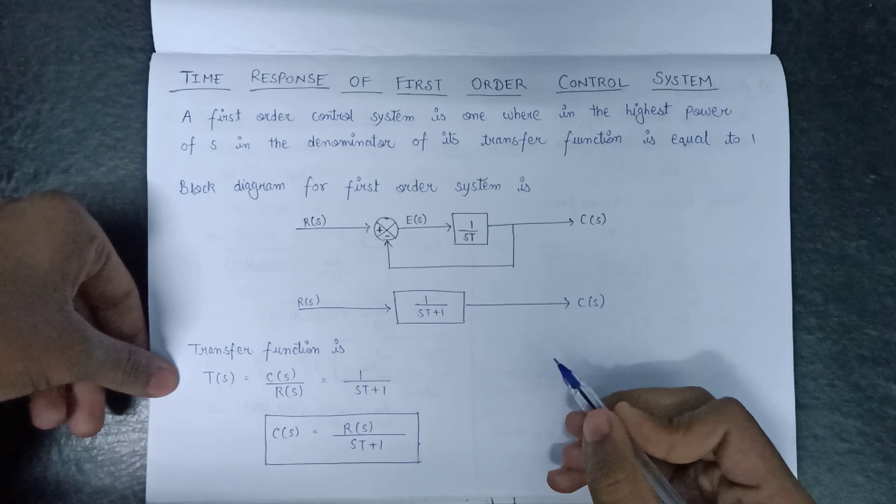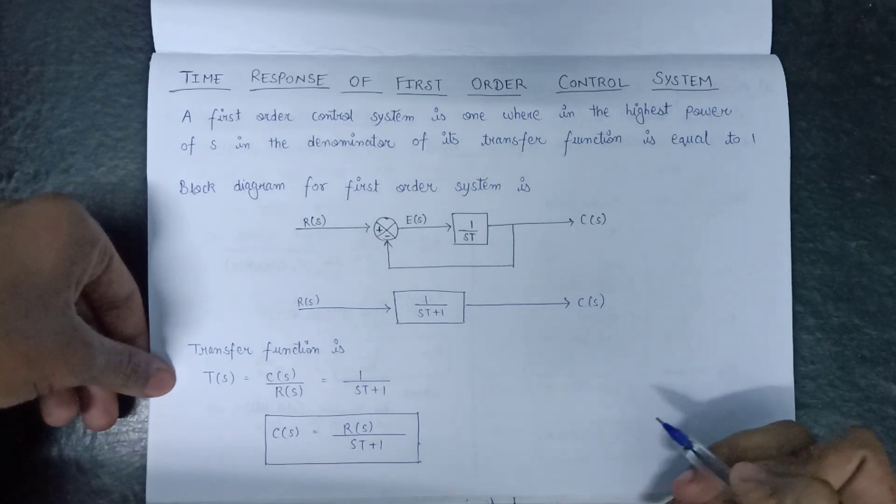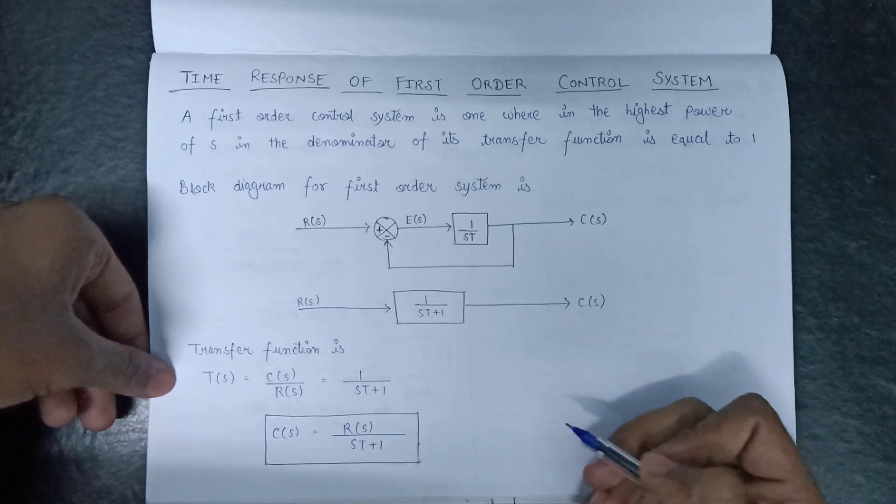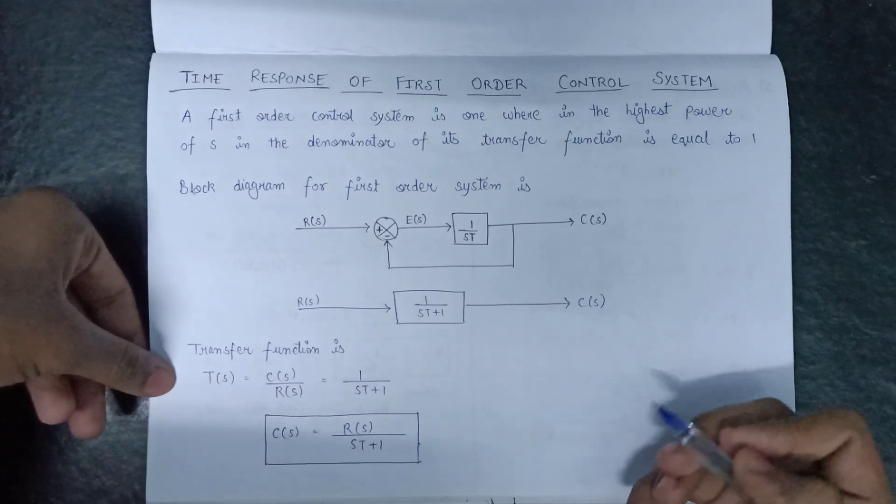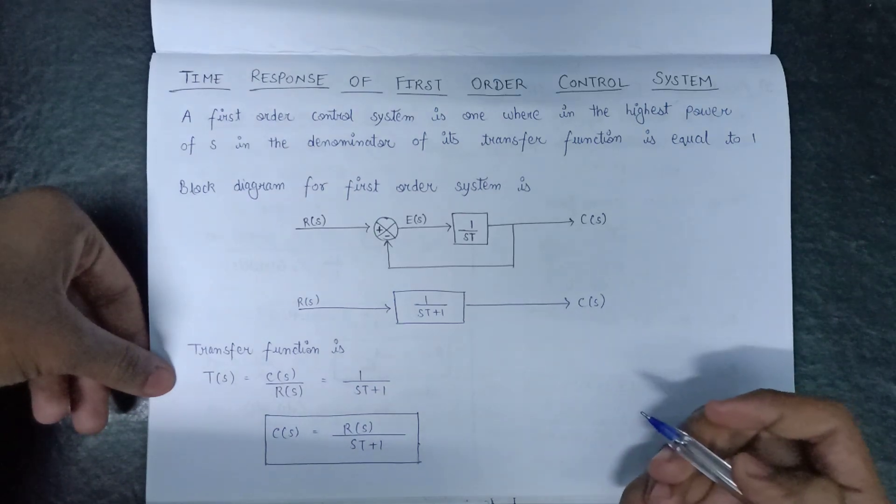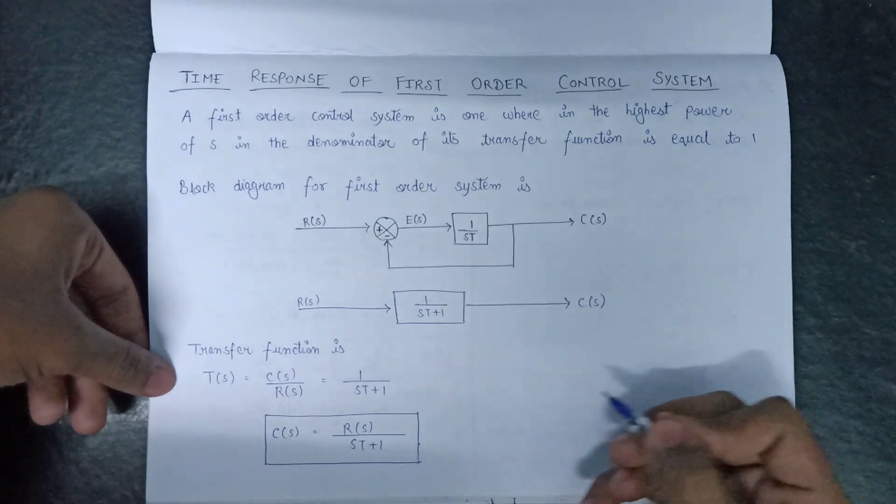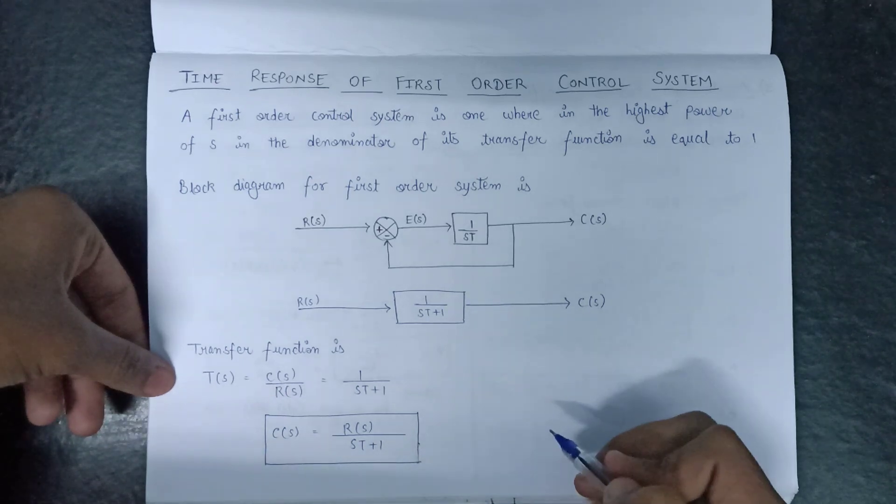This is all about first order control system. In the further videos, we will give different inputs such as unit step input, ramp input and unit impulse input to this control system of first order.